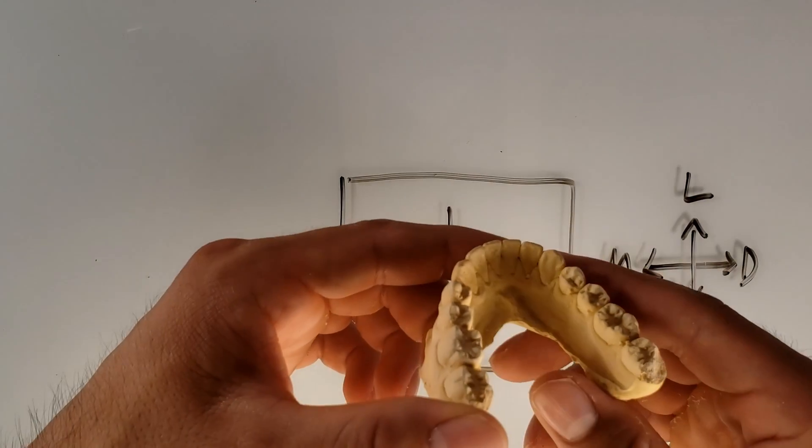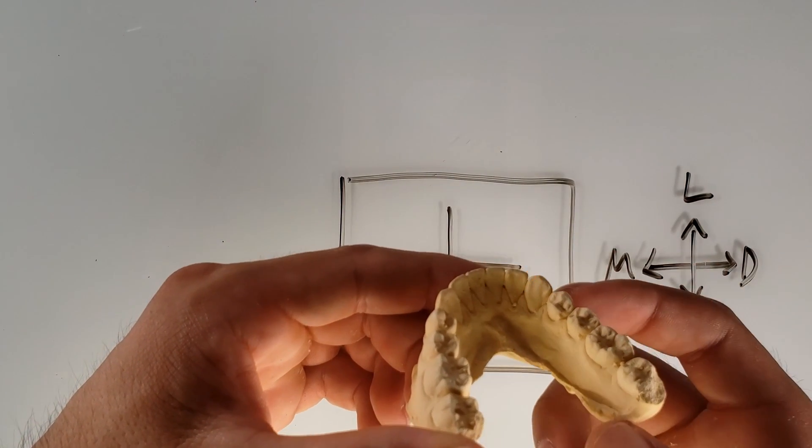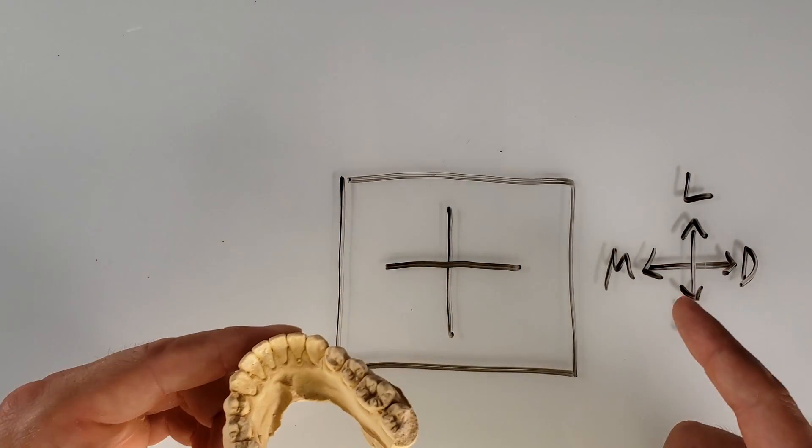Let's use our compass. So if we're referring to this canine, basically this is the distal side, this is the mesial side. So whenever we're looking at the ridges, we're using this compass.